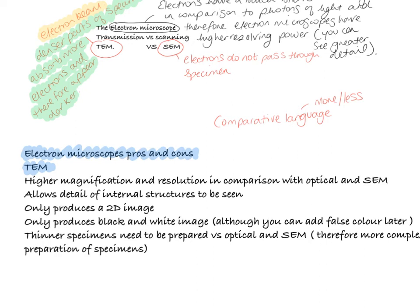Transmission electron microscopes have higher magnification resolution in comparison with both optical and scanning electron microscopes. TEMs also allow the detail of internal structures to be seen. They allow us to see intracellular structures and the detail of organelles. This is hugely important in biology to be able to see the internal structure of a mitochondria or a nucleus or a chloroplast.